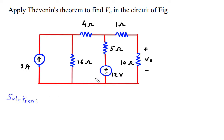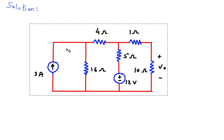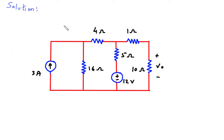First of all, we will redraw the circuit. Now we will find RTH and VTH by removing the 10 ohm resistor.